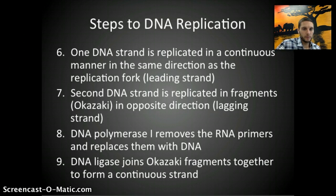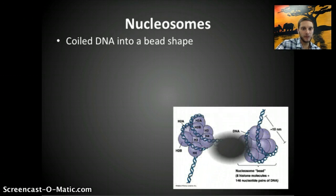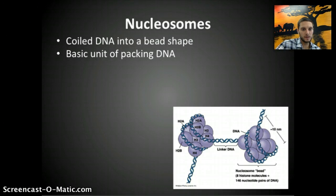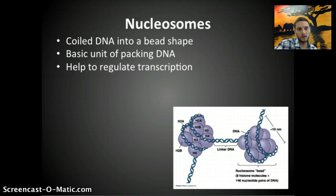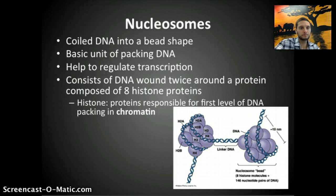Another thing to look at is the nucleosome — DNA coiled into a bead shape around a number of protein units. It's the basic unit of packaging DNA. Nucleosomes particularly help to regulate transcription. It consists of DNA wound twice around a protein and is composed of eight histone proteins. Histone proteins are responsible for the first level of DNA packing in chromatin, which eventually goes on to make chromosomes.